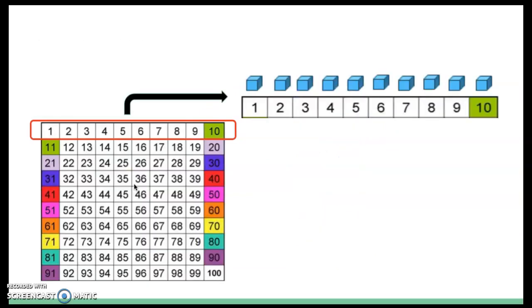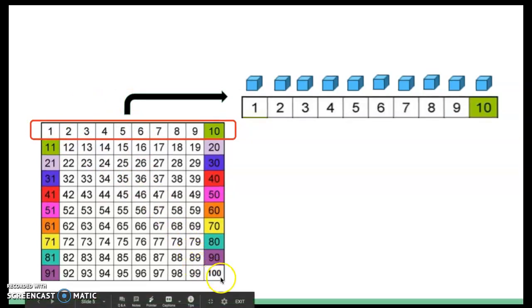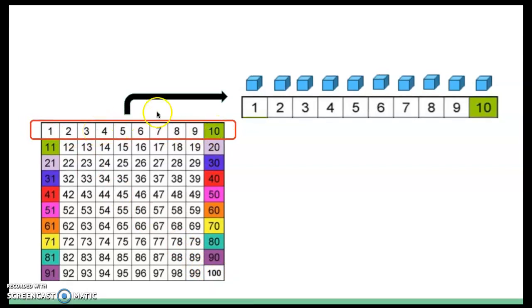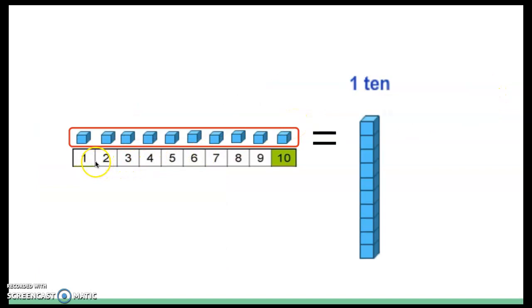We can also see this when we look at a hundreds chart. In a hundreds chart, you start with the smallest number, and as you go down it gets bigger and bigger, all the way to 100. In that first row, it goes 1 to 10. So if I pull that first row to the side, I can think of each square as 1 one — counting 1, 2, 3, 4, 5, 6, 7, 8, 9, 10. So I know that first row in a hundreds chart, and every row after, is the same as 1 ten because there are 10 ones.